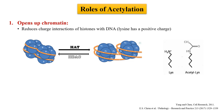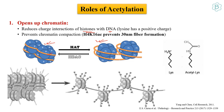Acetylation of lysine reduces the charge interaction of histones with DNA. The positive charge of lysine helps interaction with negatively charged DNA, but when acetylated that interaction is reduced, leading to loosening of the nucleosome. Acetylation also prevents chromatin compaction — for example, H4 K16 acetylation prevents 30-nanometer fiber formation.